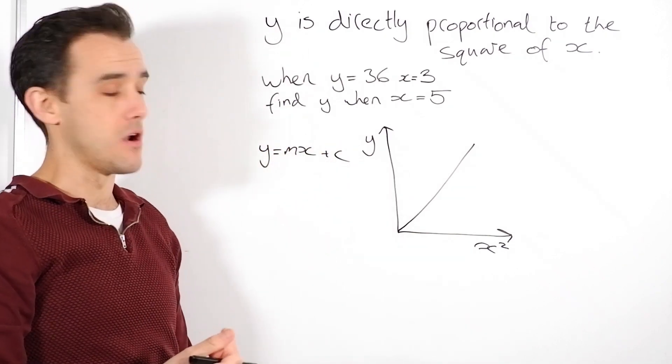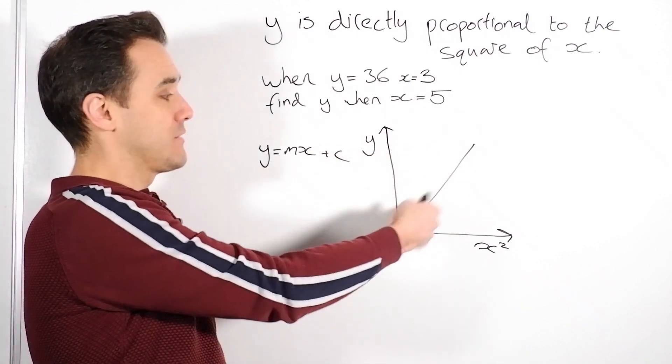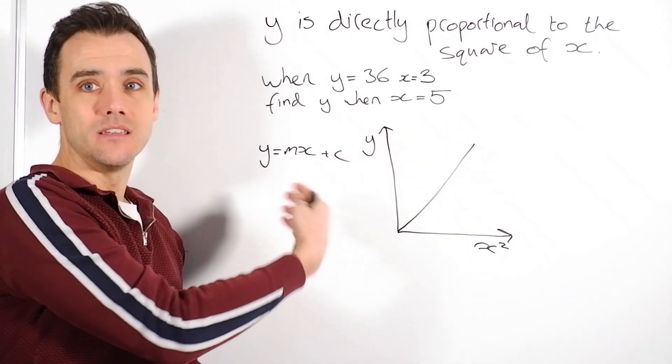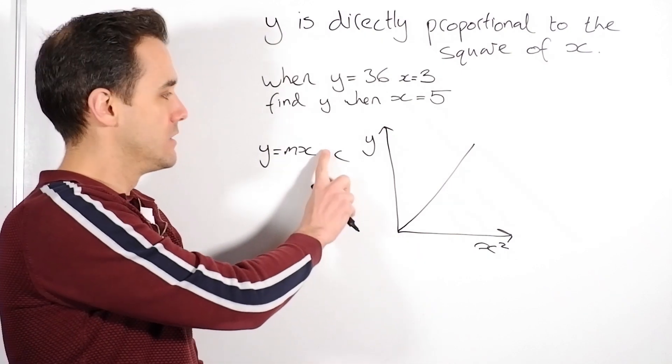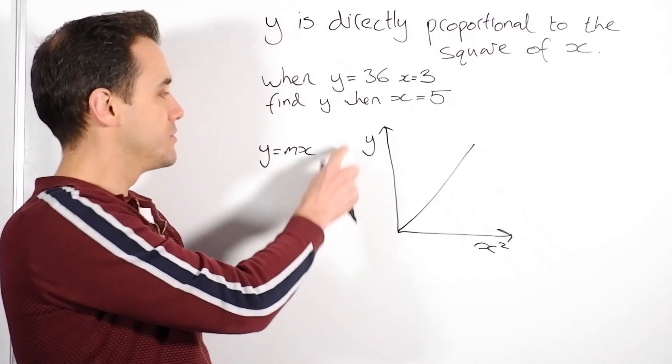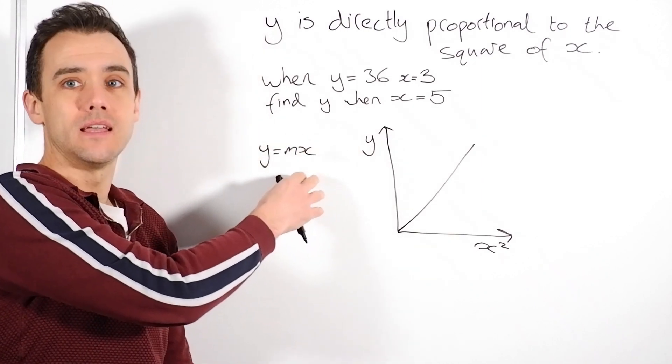We know we've done previously that y is mx plus c. That's your equation for a straight line graph. Where m is how steep the line is, is the gradient, and c is where it crosses the y-axis. Now here it crosses the y-axis at zero. So c will be zero, so that would go. So we're just left with the equation y equals mx.